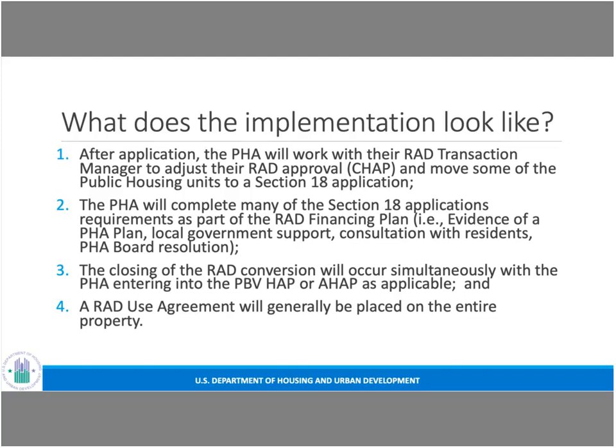In the financing plan, the PHA provides all the standard items for any RAD conversion, plus five or six additional items needed to satisfy Section 18 requirements — all submitted to one place on the RAD Resource Desk. We work internally with the SAC, give them the documents they need, they create the tech removal application, and we coordinate jointly with the housing authority. When everything is approvable, we issue our RAD Conversion Commitment and the SAC simultaneously issues the Section 18 approval letter. The closing of the RAD conversion and Section 18 disposition occurs simultaneously.